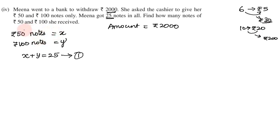If you have 50 rupees notes, you have an amount of 50 times x. If you have 100, you have an amount of 100 times y. So we add the two amounts and it will be 2000. So 50x plus 100y equals 2000.